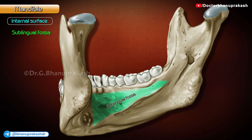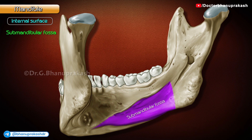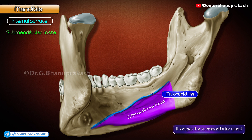Sublingual fossa: this is a shallow area above the anterior part of the mylohyoid line and lodges the sublingual gland. Submandibular fossa: this is a slightly hollow area below the posterior part of the mylohyoid line and lodges the submandibular gland.